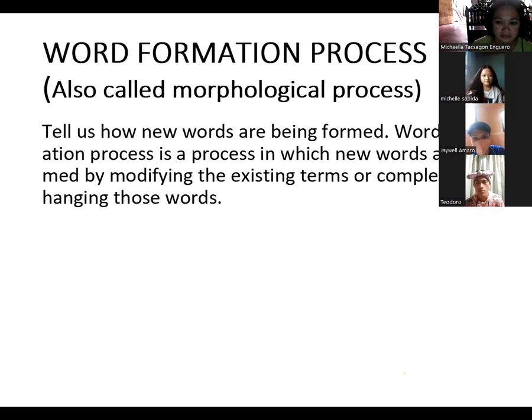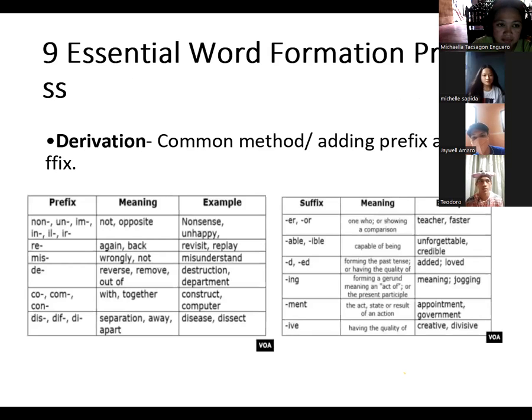Word formation process is also known as morphological process. It tells us how new words are being formed. Word formation process is a process in which new words are formed by modifying the existing terms or completely changing those words. According to our research book, word formation process is responsible for how new words are being formed or created. It has nine essentials of word formation process.